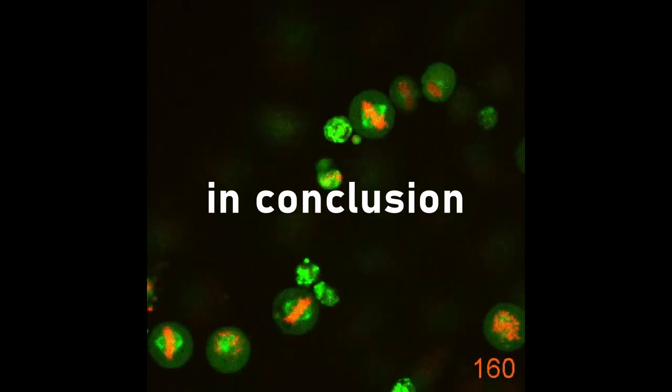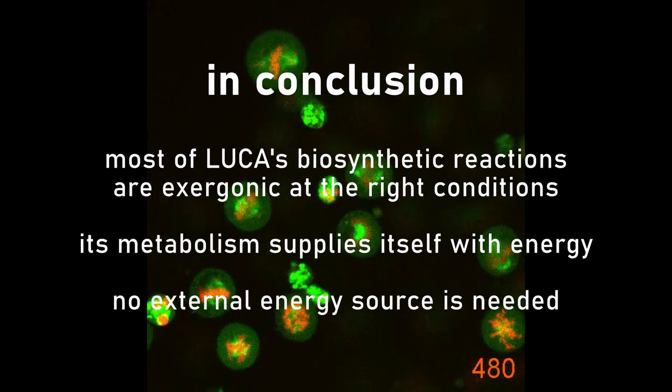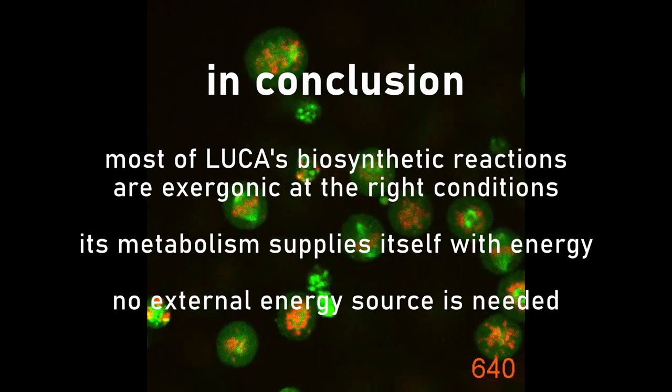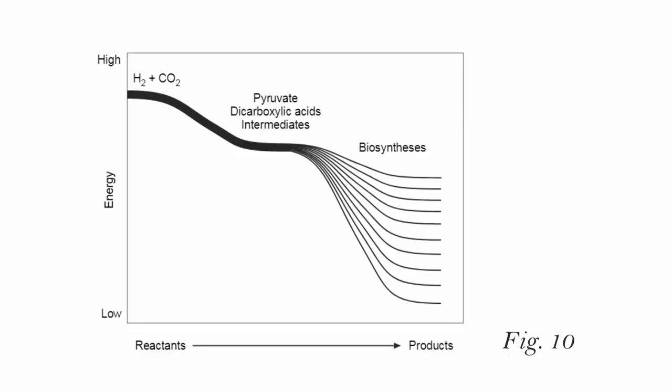Overall, the metabolic network of LUCA provides its own energy, without any other energy source than the substrates themselves. The energy comes from the exergonic reaction of hydrogen and carbon dioxide to pyruvate, energy releasing reactions of carbon like reductions, the formation of rings and aromatic systems, alkyl transfers and so on.